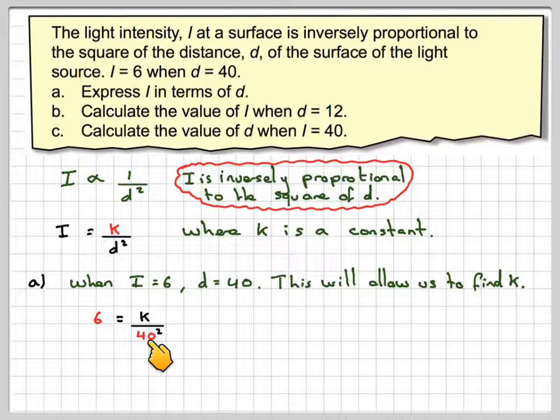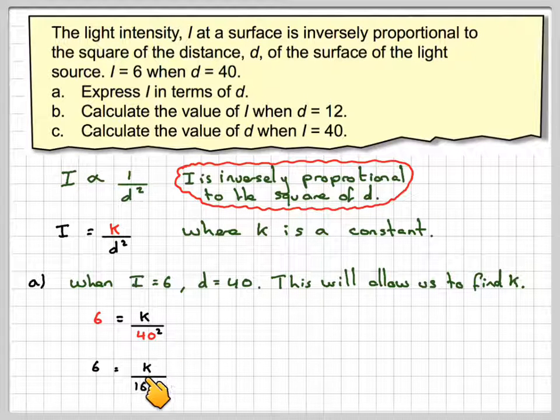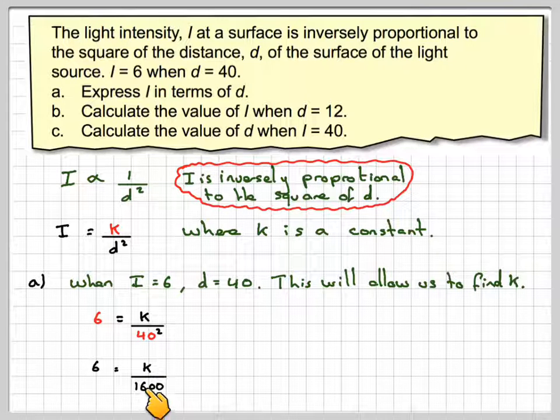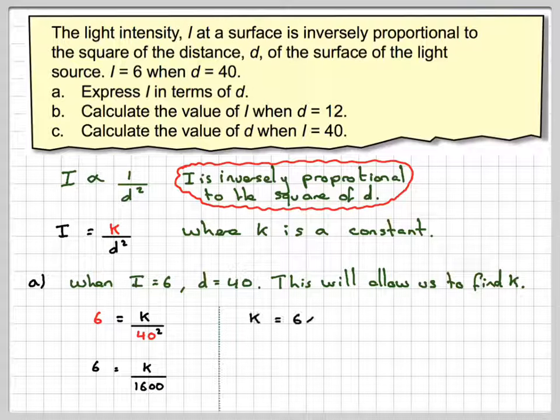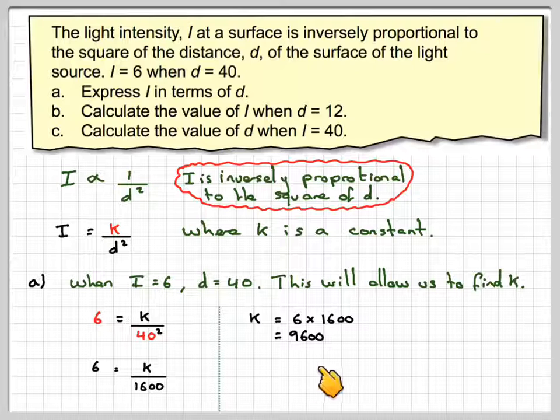So we've got 6 is equal to K over 40 squared. We need to square that 40. So we've got 6 is equal to K over 1,600. And therefore, K will be 6 times 1,600, which will be 9,600.